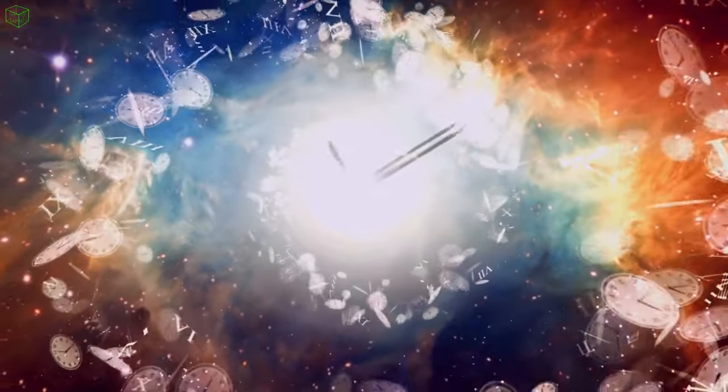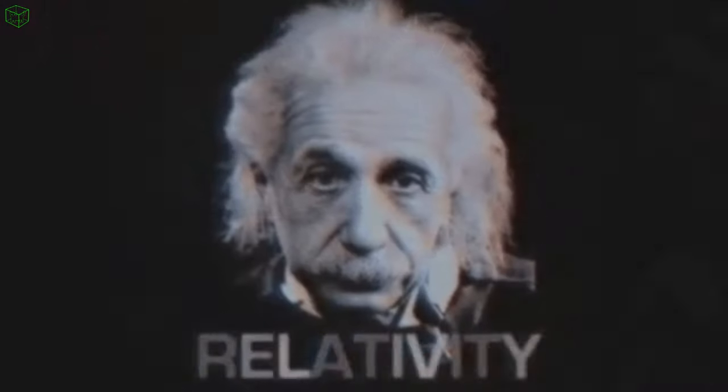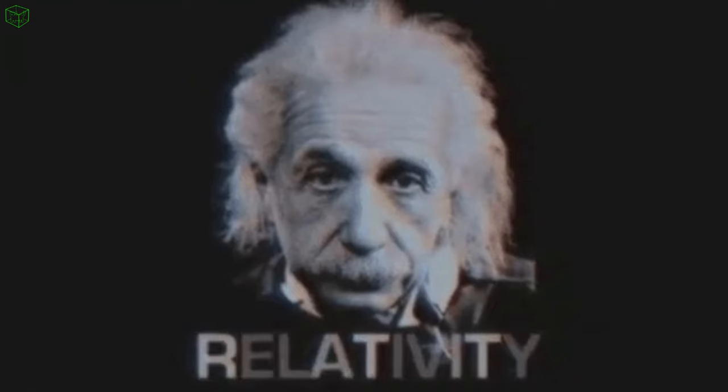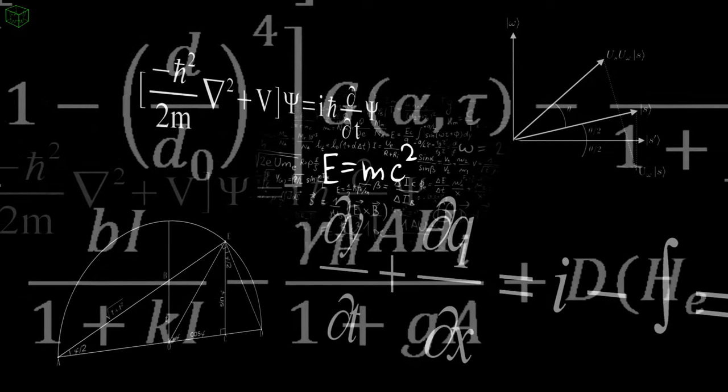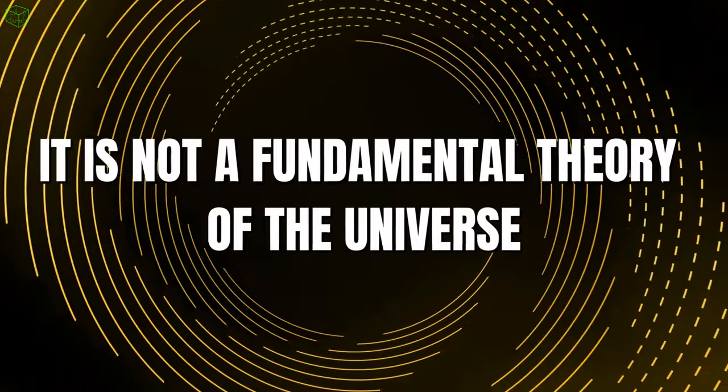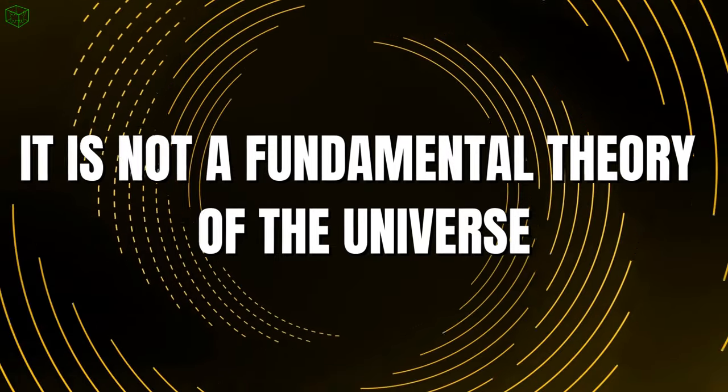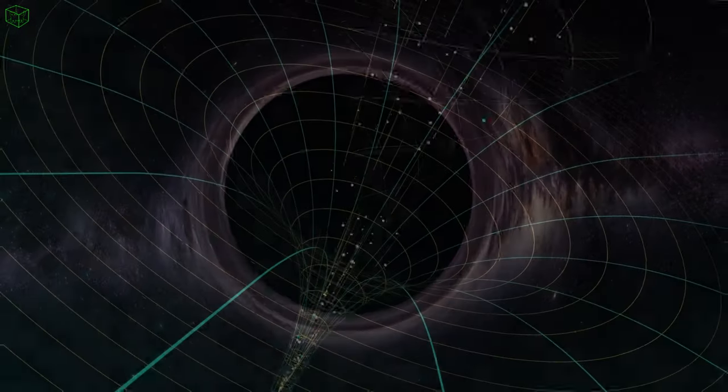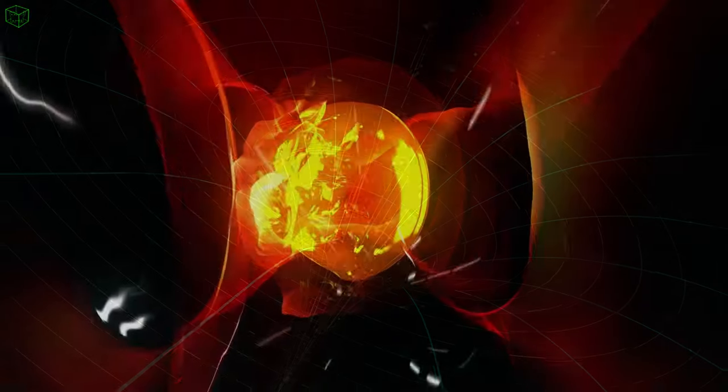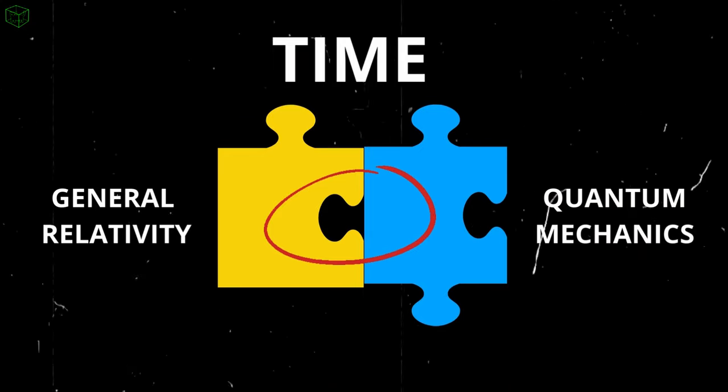We now know why it only moves in one direction, but we still don't exactly know what this thing we call time is. One of the few physical theories that explicitly requires time as a tool is general relativity. However, general relativity is a theory with its own limitations. It is not a fundamental theory of the universe, and I will explain this in more detail. For a theory to be fundamental, it needs to explain all the concepts of the nature of the universe. Unfortunately, general relativity cannot explain singularities such as those of black holes, and it cannot reconcile with quantum mechanics. In fact, one of the properties in which general relativity fails to relate to quantum mechanics is precisely in the question of how time is treated.